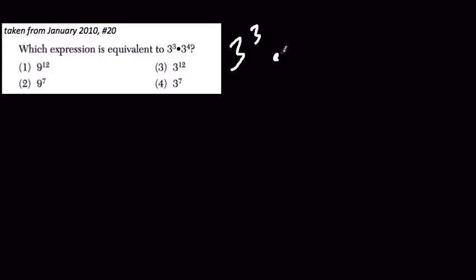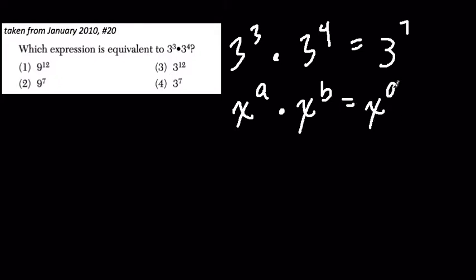So here we have 3 to the 3rd times 3 to the 4th, and we can memorize this and quickly solve it. We could say this is equal to 3 to the 7th, because our laws of exponents say any number to a power times the same number to a different power results in us adding the exponents of that power. So here we're just adding 3 and 4, and we're getting 7.